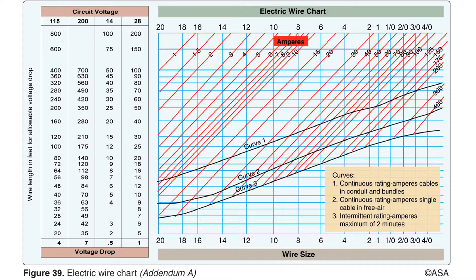We want to select wire with a gauge or length with a low enough resistance to prevent the circuit from overheating, without using an unnecessarily large gauge wire, because heavier gauge wires take up space, add unnecessary weight, and increase cost. The problems we will work in this class will all involve the 28 volt circuit with a maximum allowable voltage drop of 1 volt.